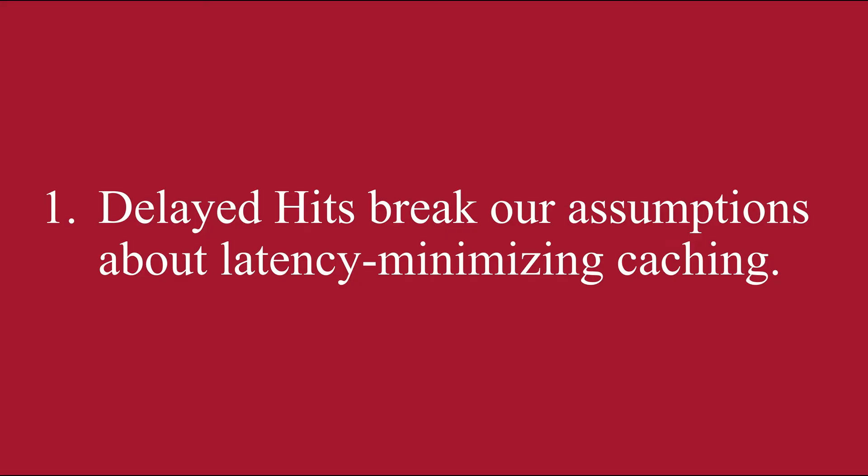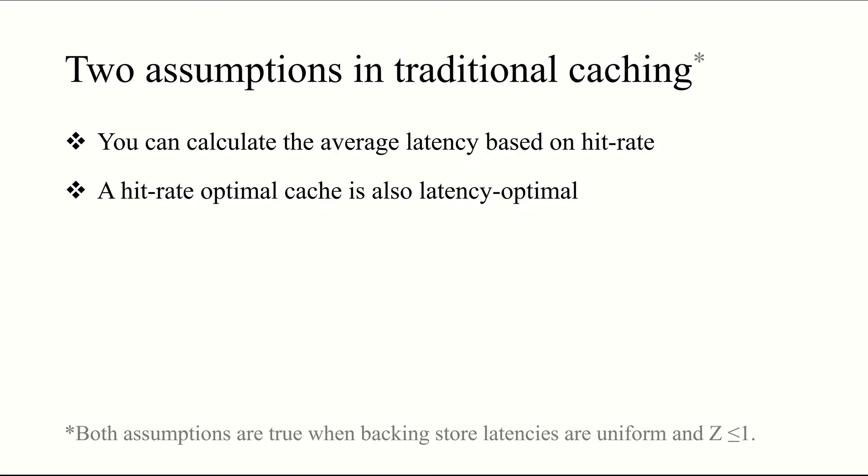Let's look at this first point in more detail. Delayed hits break our assumptions about optimizing for cache latency. Specifically, there are two assumptions that I want to discuss. First, that you can calculate average caching latency using the hit rate. And second, that a hit rate optimal cache is also latency optimal. Now, both of these assumptions are true when backing store latencies are uniform, and the parameter we defined as Z is 1 or smaller. However, they're not true when Z is larger.